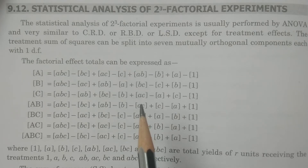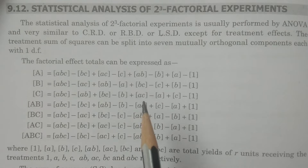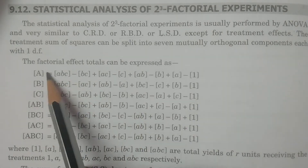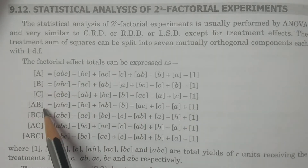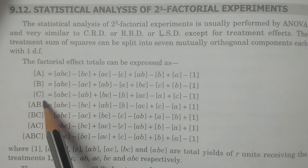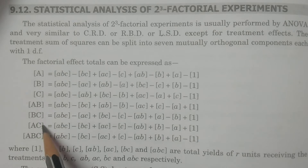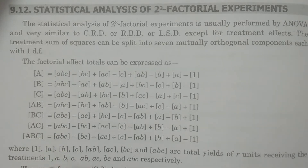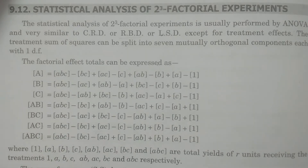The treatment effects consist of 3 main effects: A, B, and C. The interaction effects are AB, BC, AC, and ABC — giving 4 interaction effects: 3 first-order interactions and 1 second-order interaction.